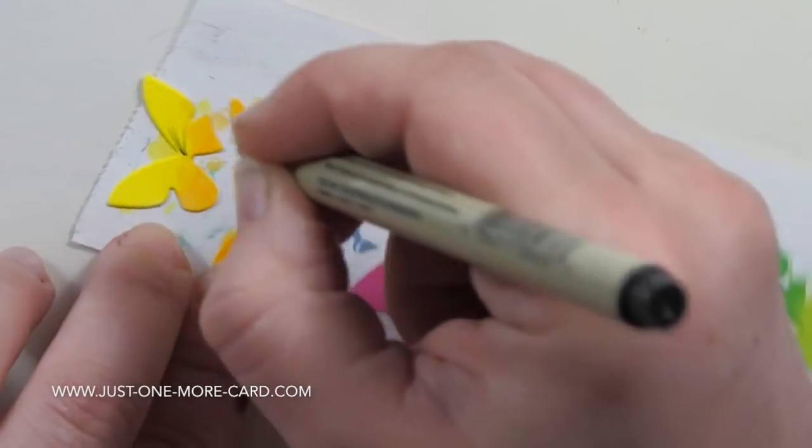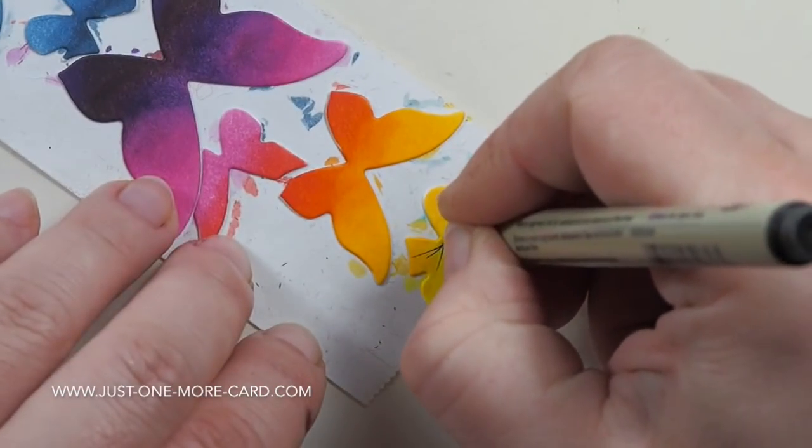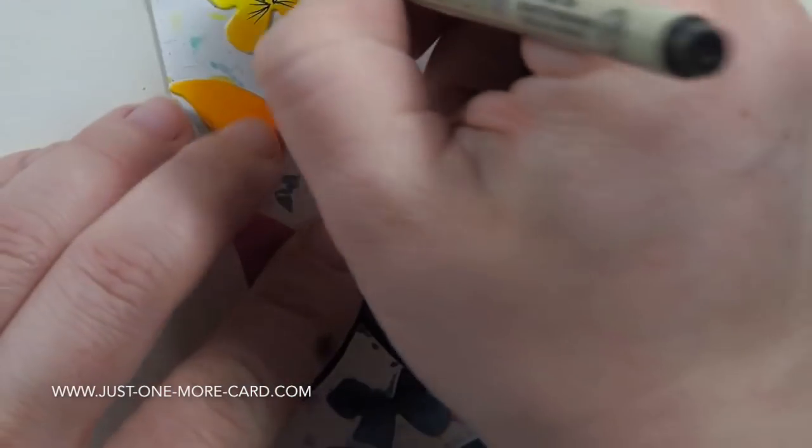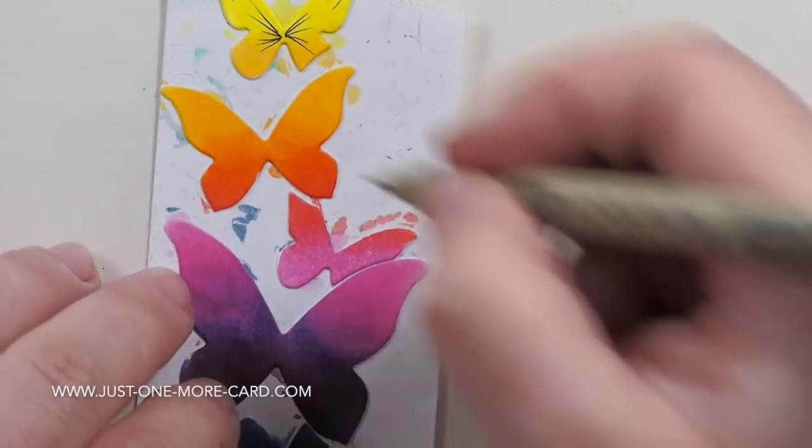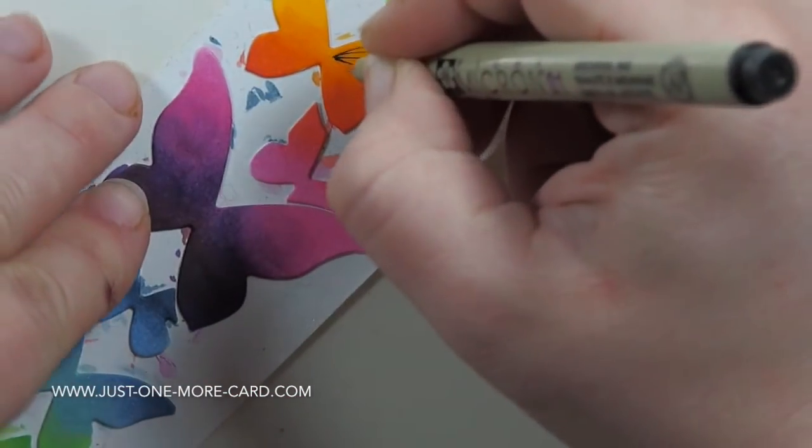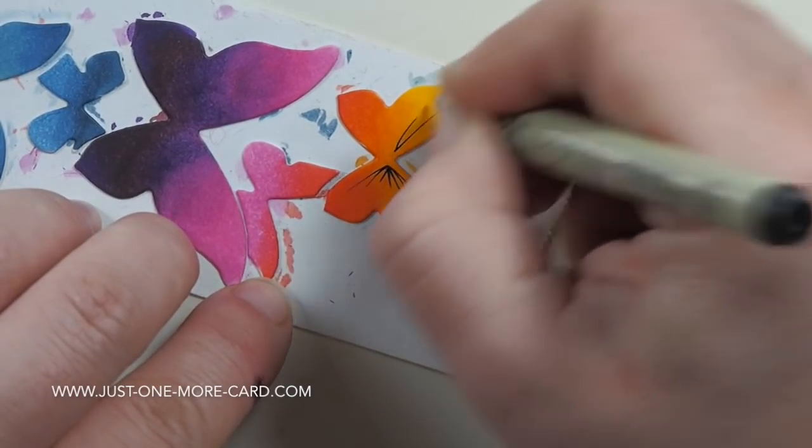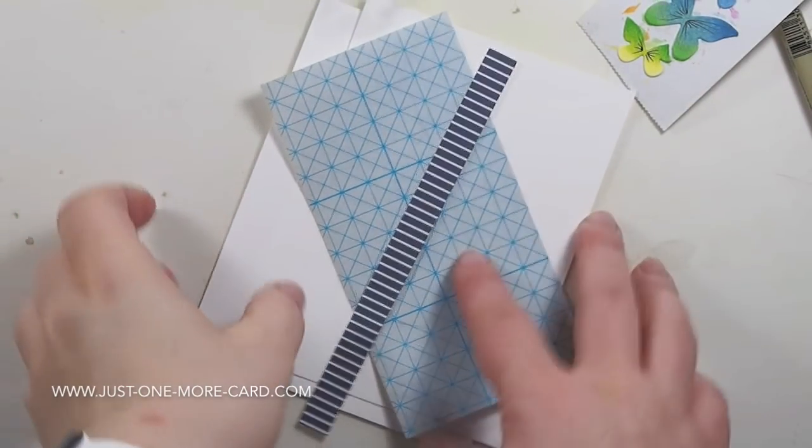Now the die cuts themselves are rather simple. It's just shapes. So I decided to enhance them a bit and I'm using a very fine multi-liner here from Copic, but you can use any pen that you have that gives you very fine lines. And you can see that I'm just flicking some lines from the center of the body of the butterflies off to the side to add some detail.